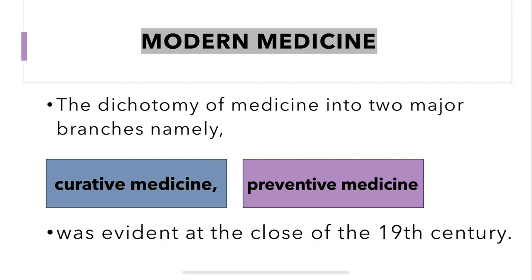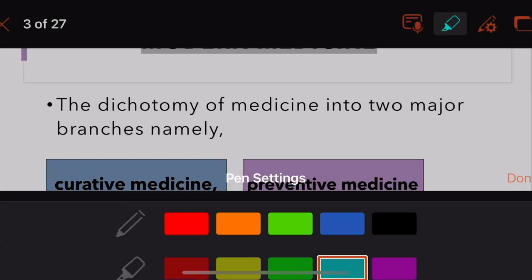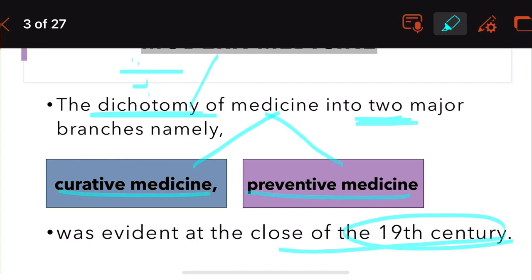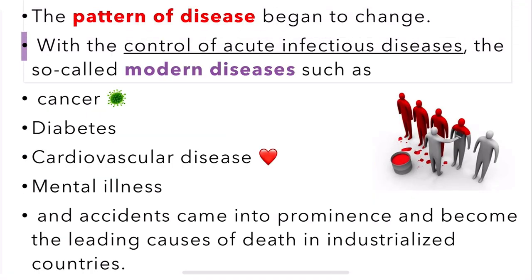The dichotomy of medicine into two main branches, namely curative medicine and preventive medicine, was started close to the 19th century. You can see the division or comparison of modern medicine into these two branches. Also, the pattern of diseases began to change — there was control of acute infectious diseases and there was prevalence of modern diseases.